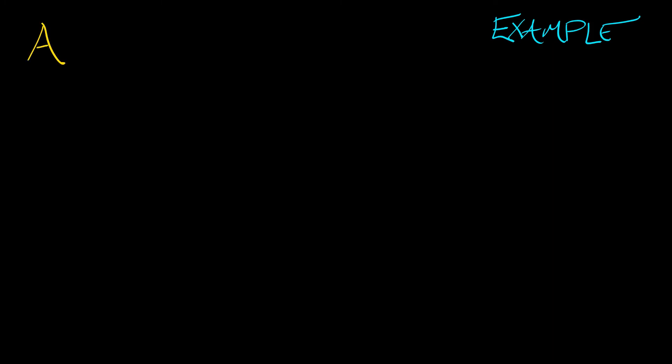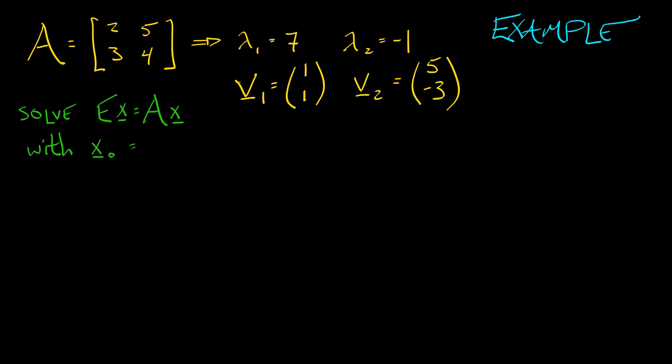Let's do a simple one. Let's say that A is the 2x2 matrix with columns 2, 3, and 5, 4. I'm going to leave it to you to check that this has eigenvalues, lambda 1 equals 7, lambda 2 equals negative 1. The corresponding eigenvectors are V1 is 1, 1, and V2 is 5, negative 3.